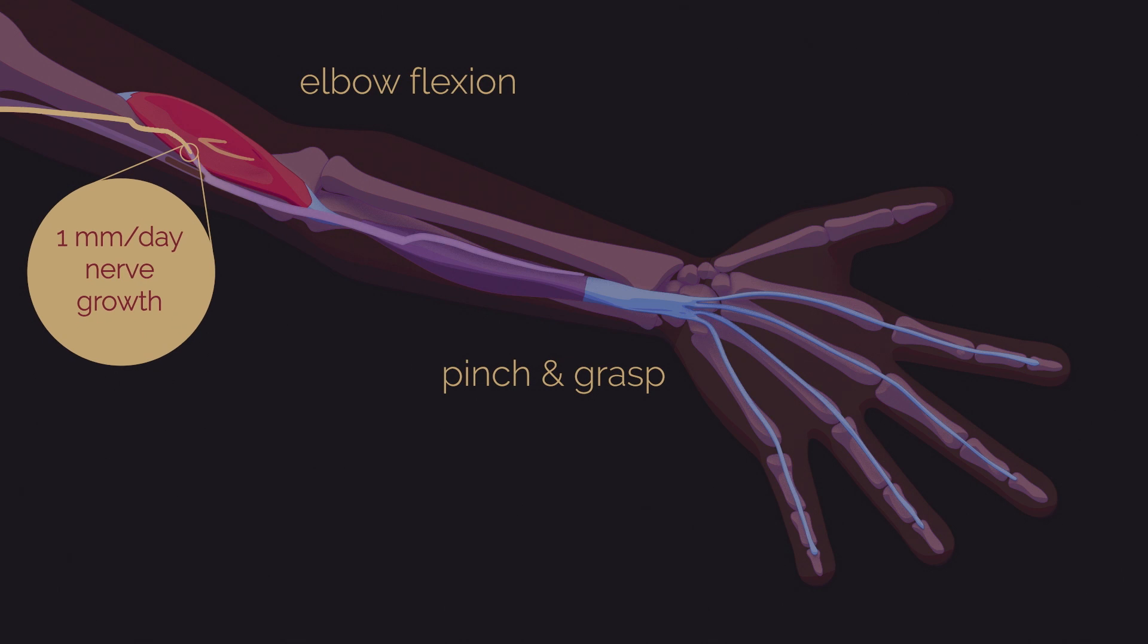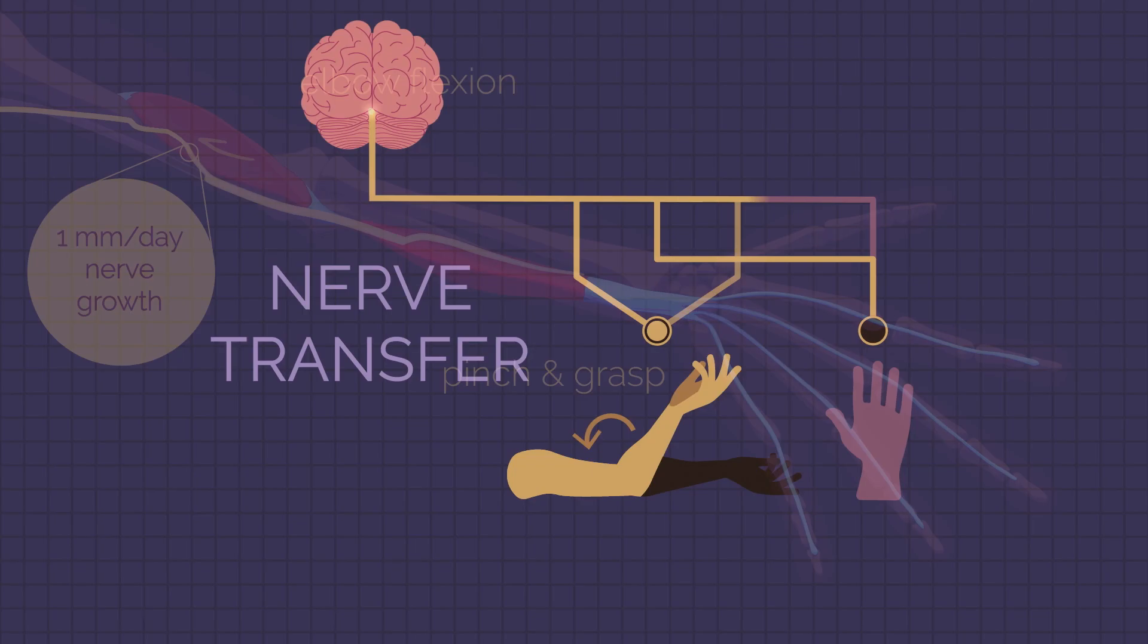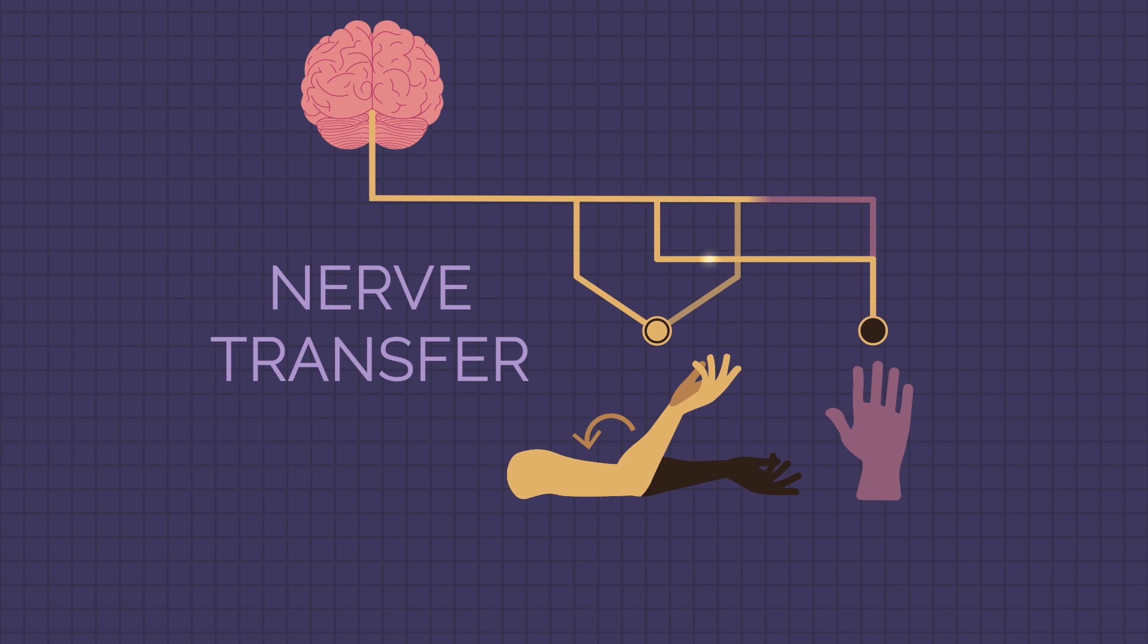Over time, the nerve grows into the muscles to give some pinch and grasp function without losing the ability to flex the elbow.